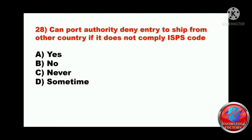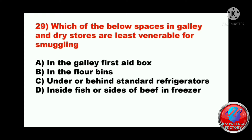Question twenty-eight: can a port authority deny entry to a ship from another country if it does not comply with the ISPS code? A) yes, B) no, C) never, or D) sometimes. The answer will be A - yes, they can deny. Question twenty-nine: which of the below spaces in the galley and dry store are least vulnerable for smuggling? A) in the galley first aid box, B) in the floor bins, C) under or behind standard refrigerator, or D) inside fish or sides of beef in freezer. The answer will be A - in the galley first aid box.